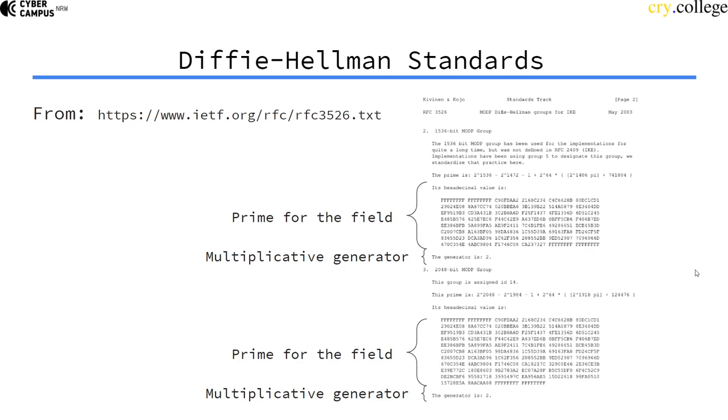This is just the prime number that is being used. As you can see, it's quite long, so the discrete logarithm problem stays infeasible to compute. And here is a generator of this multiplicative group within the field, that is 2.